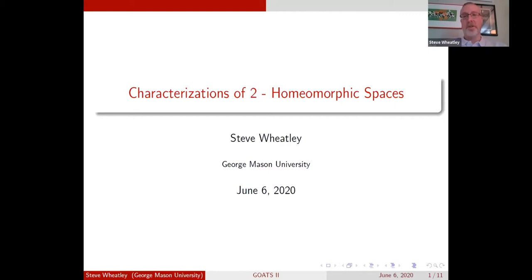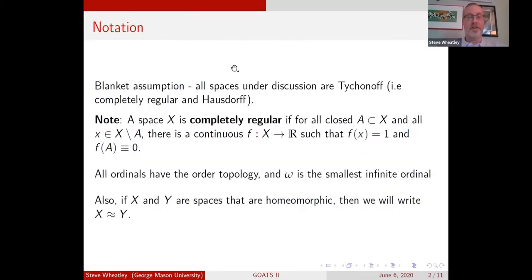I want to talk about characterizations of two homeomorphic spaces, which is part of my thesis research. Let me give you a couple blanket assumptions. I'm going to talk about Tychonoff spaces. Tychonoff is completely regular and Hausdorff. Just a reminder, completely regular means the space has enough continuous functions to separate points from closed sets. If you have a closed set A and a point not in A, there's some continuous function that's one at the point and zero on the closed set.